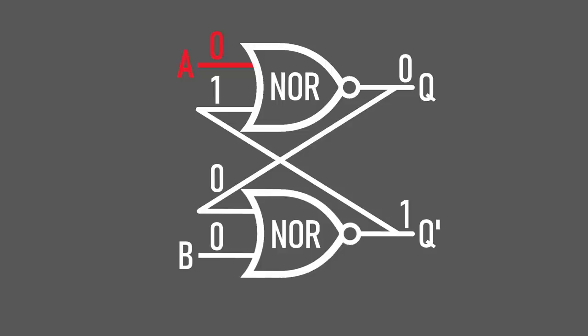This is how an SR latch works. Since activating the bottom input turned on or set the output line, and activating the top line turned off or reset the output line, we can call the bottom line the set line, and the top line the reset line. For compactness, we could assign them the variables S and R for set and reset.